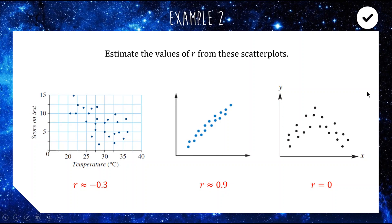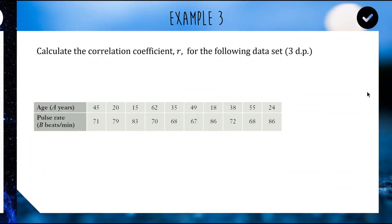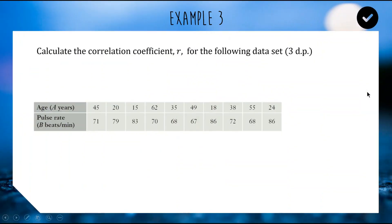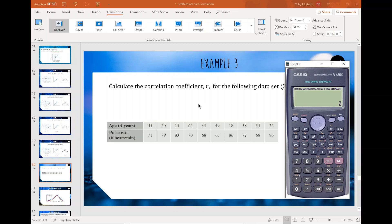Now the last bit of today's lesson is I'm going to show you how to use your calculator in stats mode to actually calculate the value of the correlation coefficient r. I'm just going to switch modes and get my calculator up. Here is my Casio emulator — mine is a little bit older than yours, but it still does most of the same stuff.